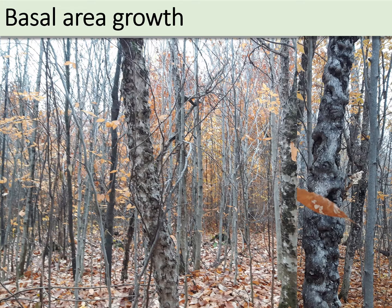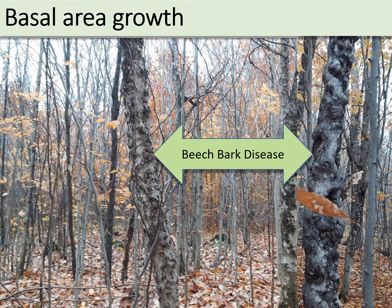In older stands with a large proportion of less vigorous trees, survivor trees will have higher mortality and lower growth. For instance, stands that contain significant portions of beech were found to have minimum or even negative basal area growth due to beech bark disease.